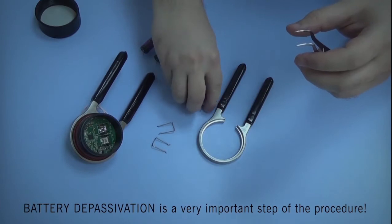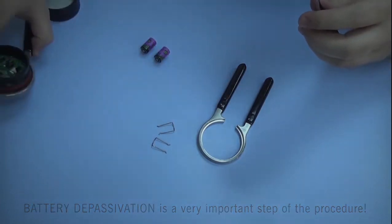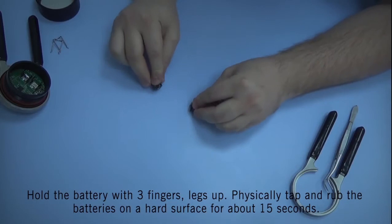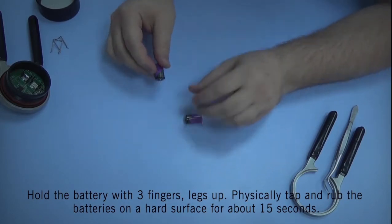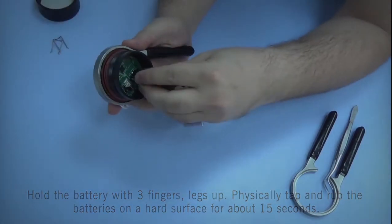Battery depassivation is a very important step in the process. You may do this by holding the battery with three fingers and the legs up while physically tapping and rubbing the battery against a hard surface for about 15 seconds.